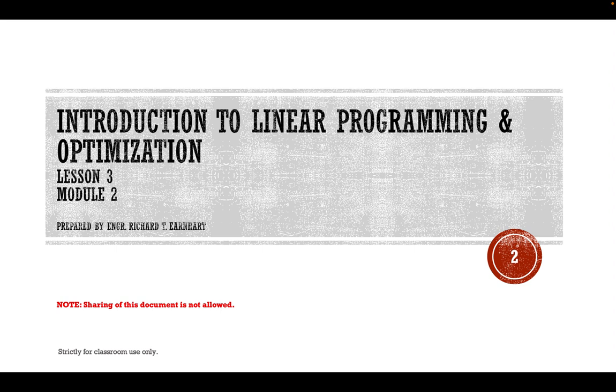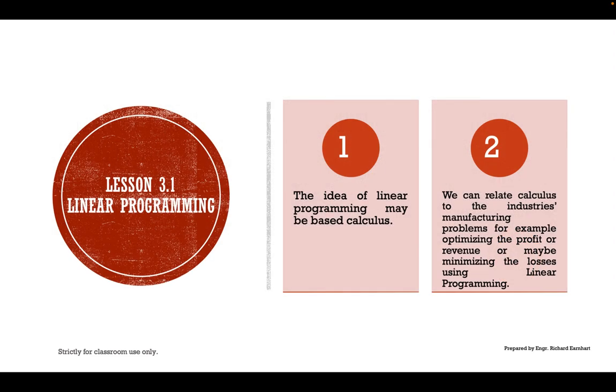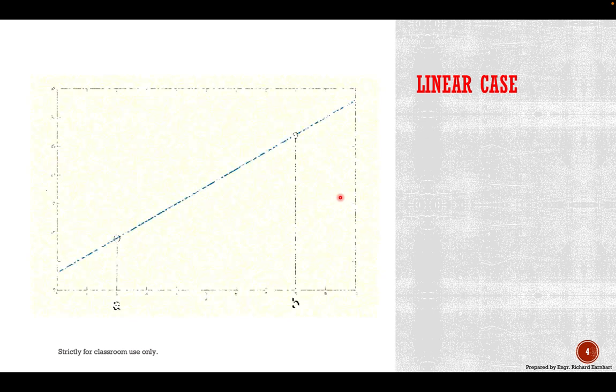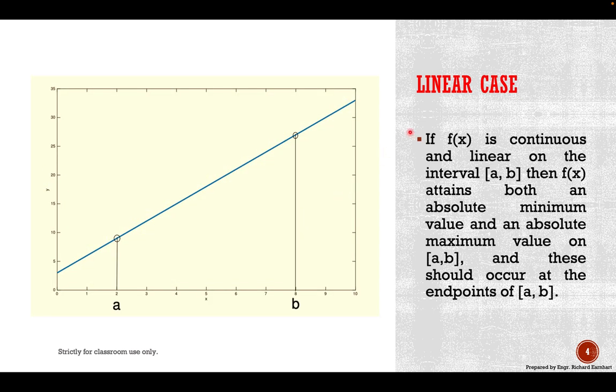For lesson number three under module two, we're going to discuss introduction to linear programming and optimization. The idea of linear programming may be based on calculus. We can relate calculus to the industries manufacturing problems, for example optimizing the profit or revenue or maybe minimizing the losses using linear programming.